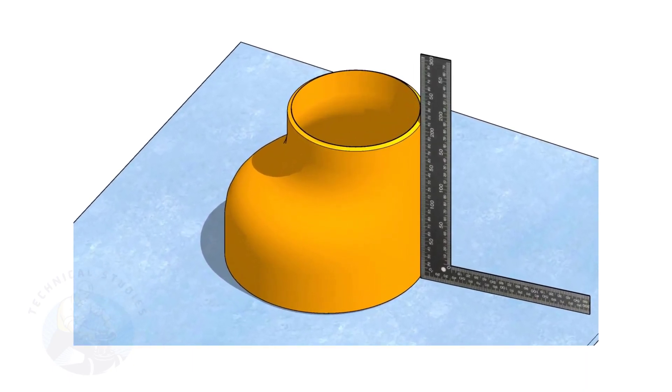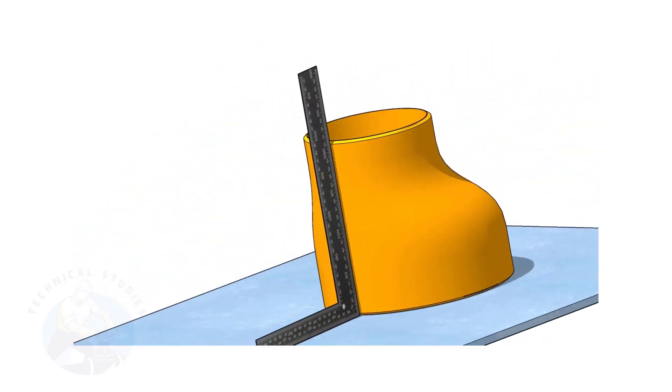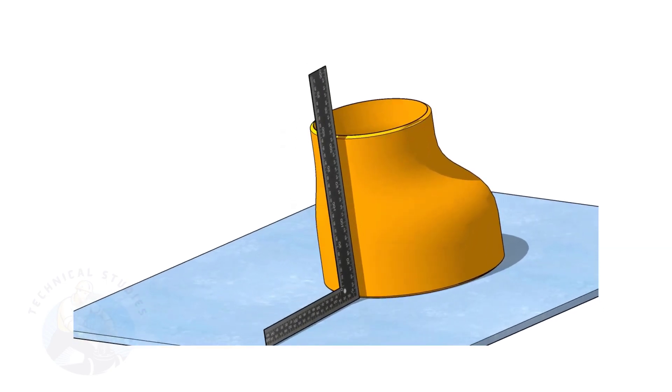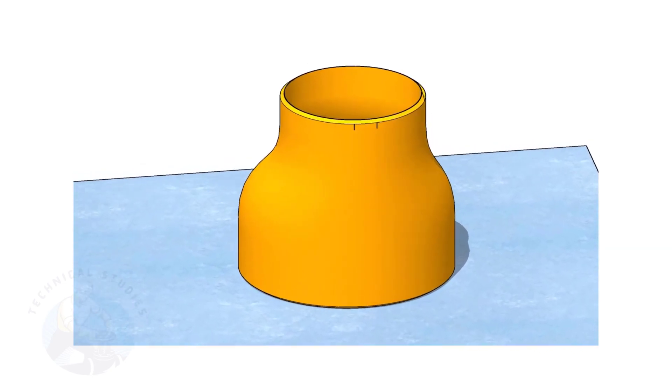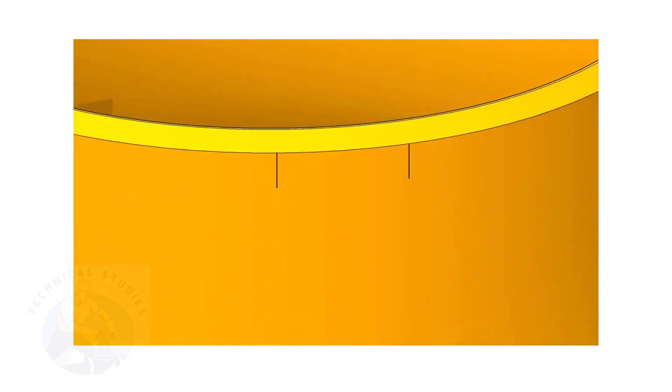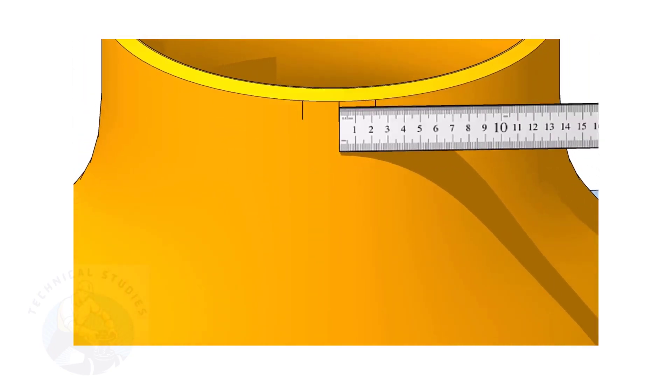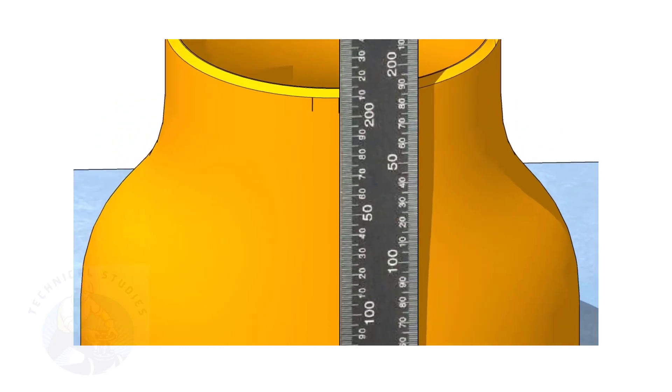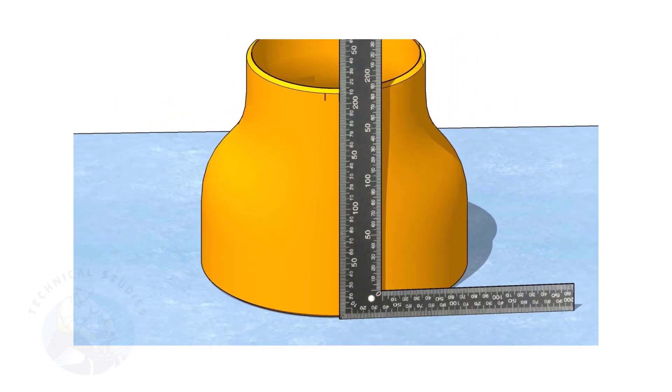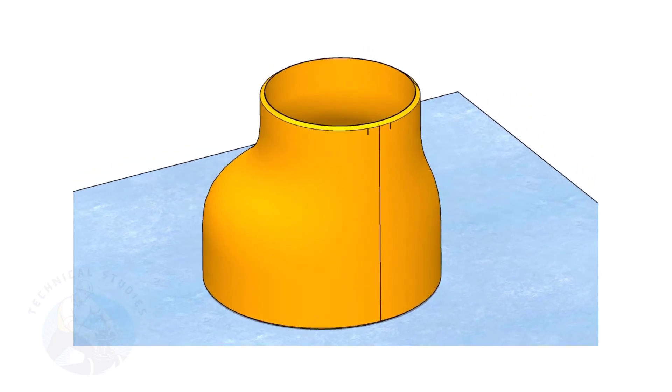It is a good practice marking the center lines of the fittings before starting the fit up, especially an eccentric reducer. I have already posted videos on how to mark the center lines of an eccentric reducer in different methods. In this video, I will show you the method of fitting an eccentric reducer to a pipe that is already fitted to a flange.